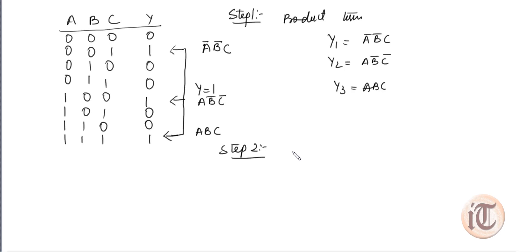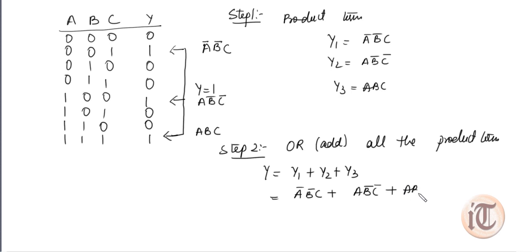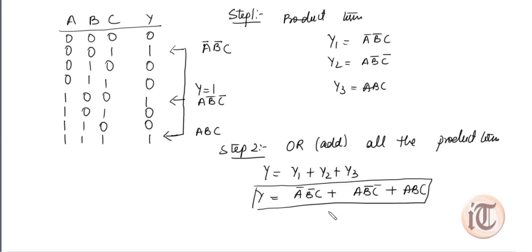In Step 2 and Step 3 combined, we OR all the product terms. So y equals y1 plus y2 plus y3, which becomes y = Ā·B̄·C + A·B̄·C̄ + A·B·C. This is the required standard SOP expression for the given truth table.